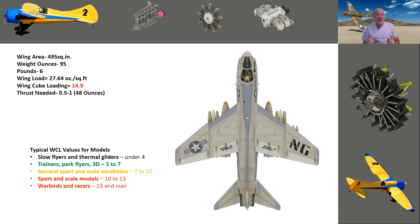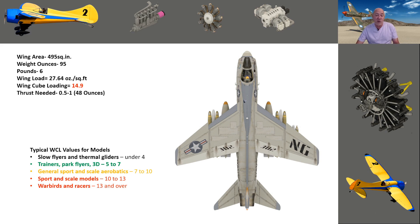Keep in mind — cubed wing loading is for us modelers to understand the characteristics of an airplane we're about to fly. It applies to anything you fly. If you know the area and the weight, you can check where it falls and say it's in the green or the orange and it shouldn't be too hard to fly.